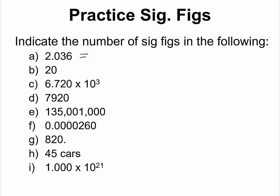In question A, you should have four significant figures. Remember, this zero is sandwiched between two non-zero numbers, which means it is significant. For question B, this would be one significant figure, because we have a trailing zero here and this trailing zero is not followed by a decimal, which means it is not significant. For question C, this number is written in scientific notation, so there is no ambiguity — simply look at the decimal part, so this would have four significant figures.